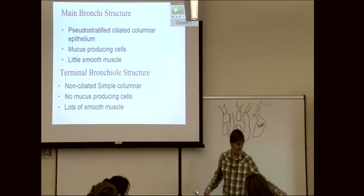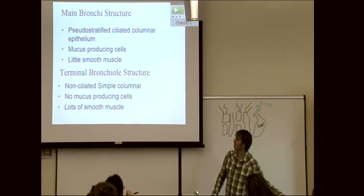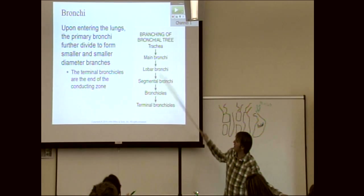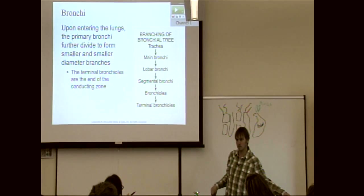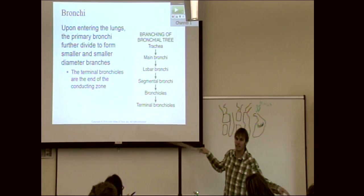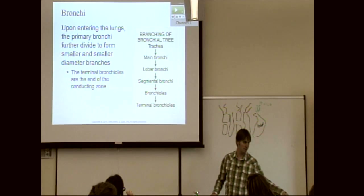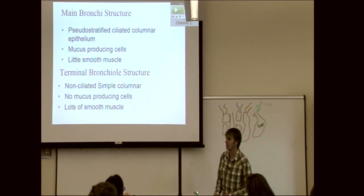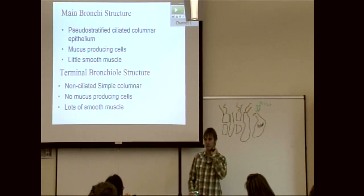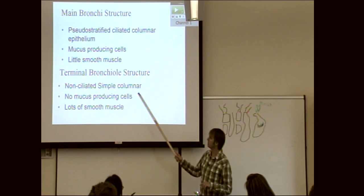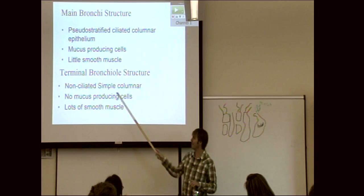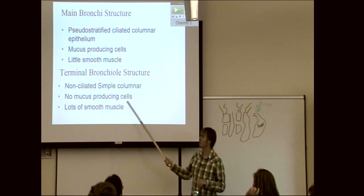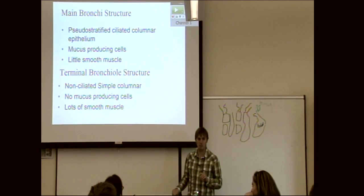Comparing the main bronchi to the terminal bronchioles — at the end of the conducting zone the epithelium becomes ciliated, non-ciliated simple; there are no mucus cells, and there is lots of smooth muscle. The structures in between slowly change.